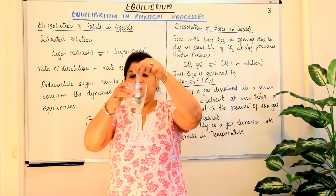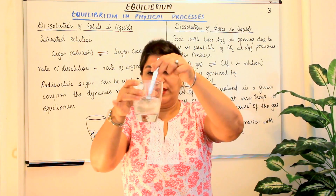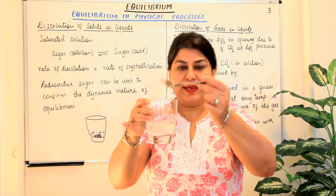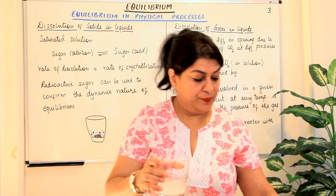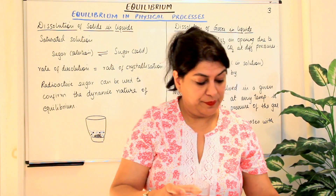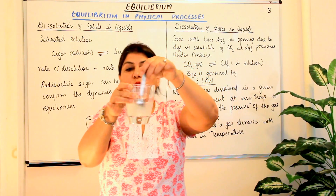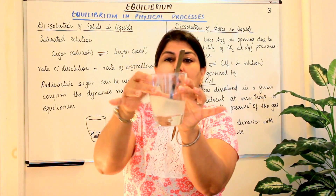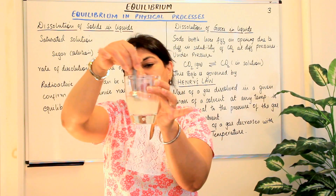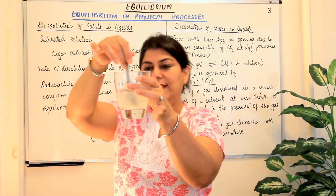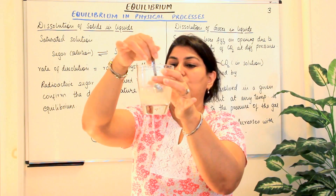One spoon has almost dissolved. If I add more spoons — let's say two, three — I have now added three spoonfuls of sugar in that little water, which is about one third of this glass, and I try to dissolve it. At this temperature, I find the three spoons are finding it difficult to dissolve in this water.